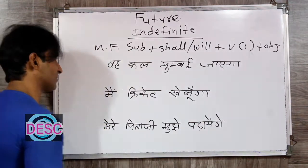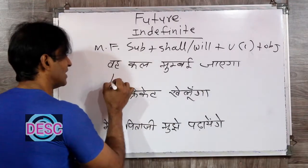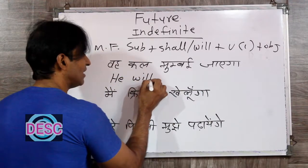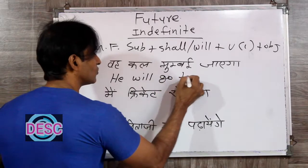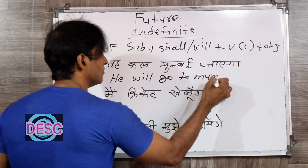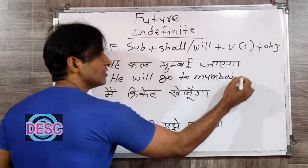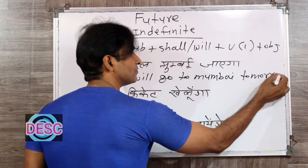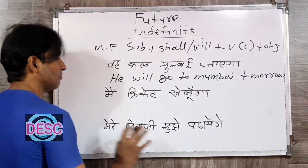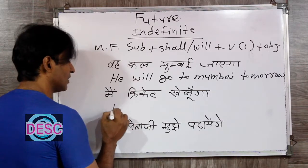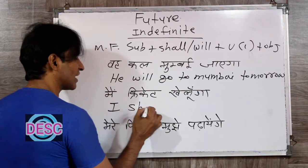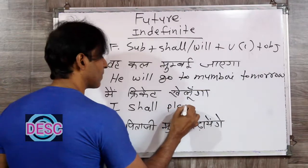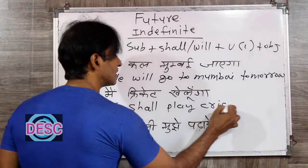Let's make sentences one by one quickly. 'Voh kal Mumbai jayega' — He will go to Mumbai tomorrow. 'Main cricket khelunga' — I shall play cricket.